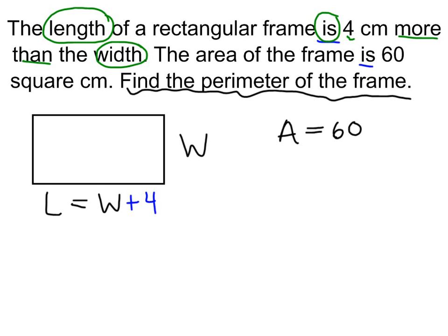Before I can even find the perimeter, in which perimeter equals 2 times L plus 2 times W, I need the L and the W. And I don't actually know what W is, and I know what L is in terms of W, but that still doesn't help me.